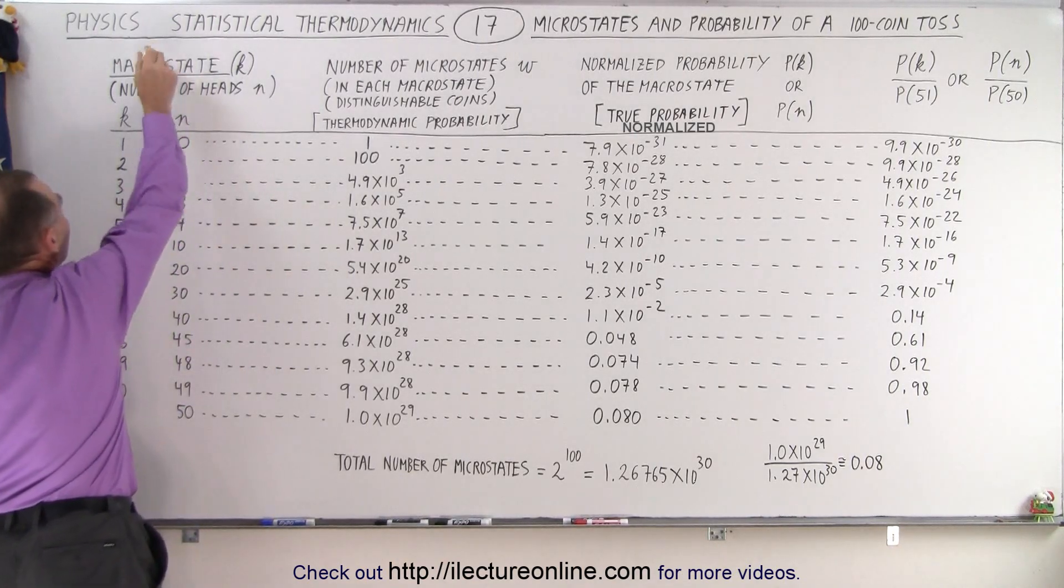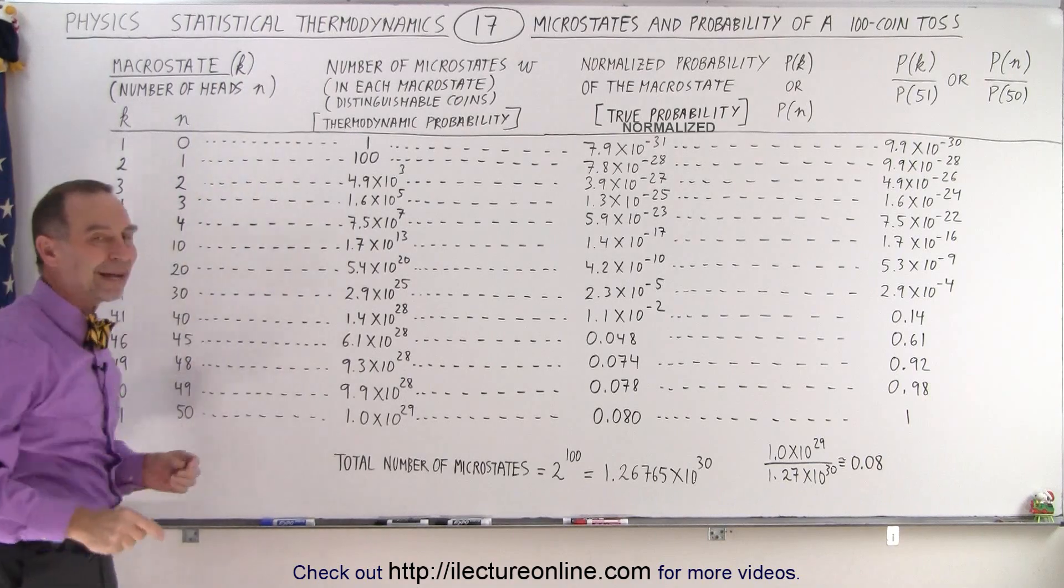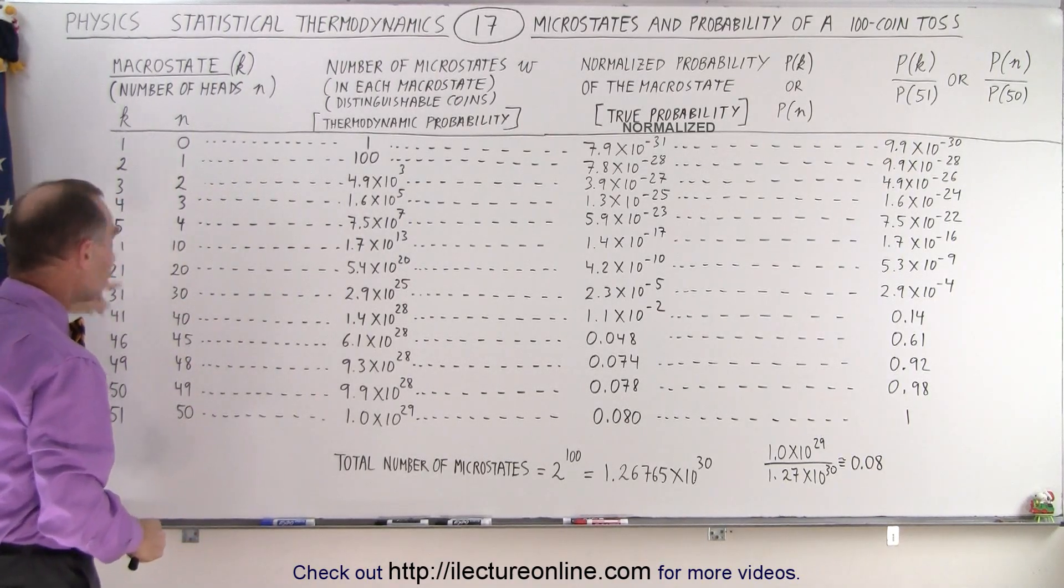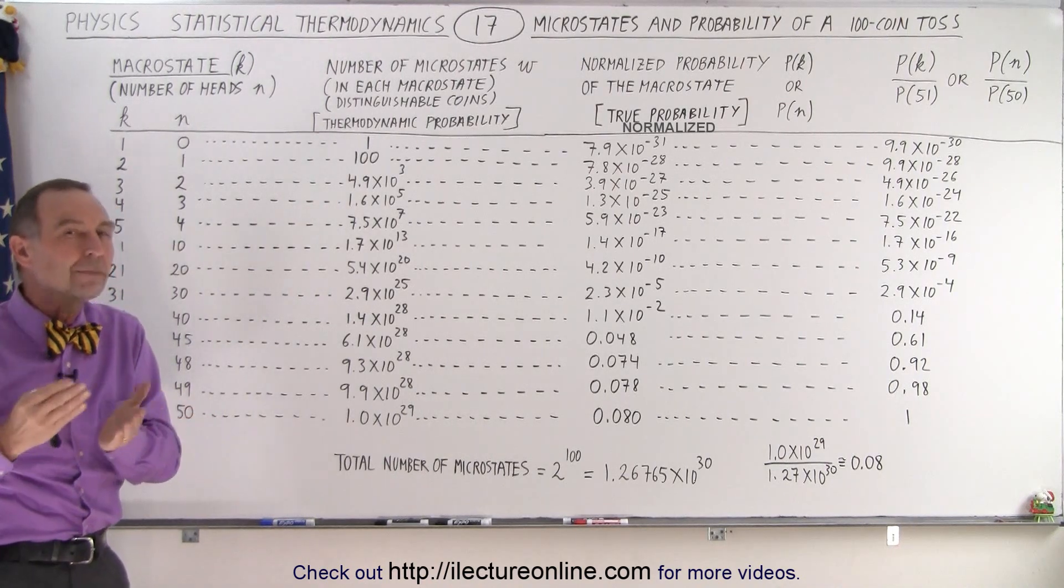Notice when we talk about the macrostates, we typically number them by K. The first macrostate, the second macrostate, the third, and so forth. In that respect, there's 101 macrostates.